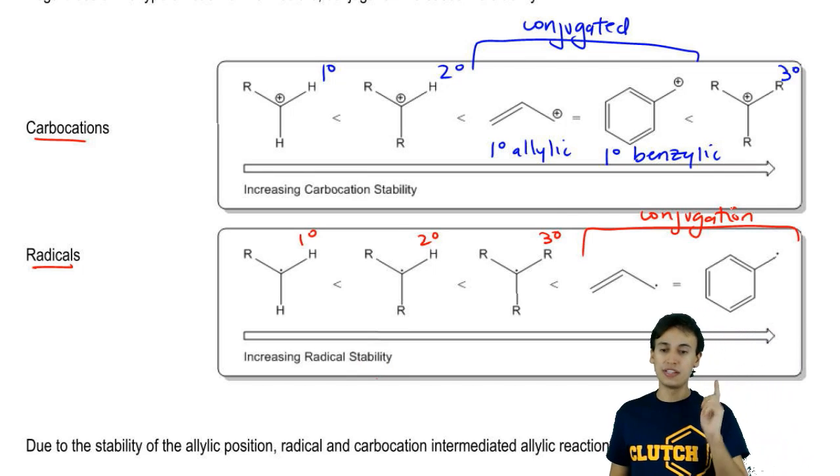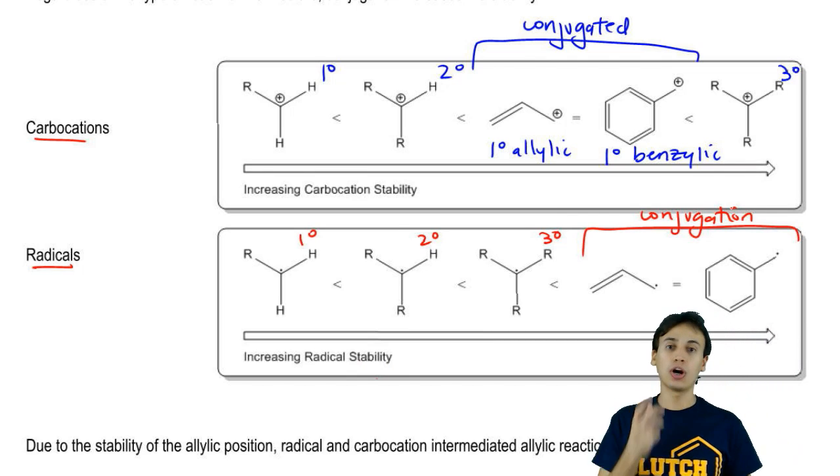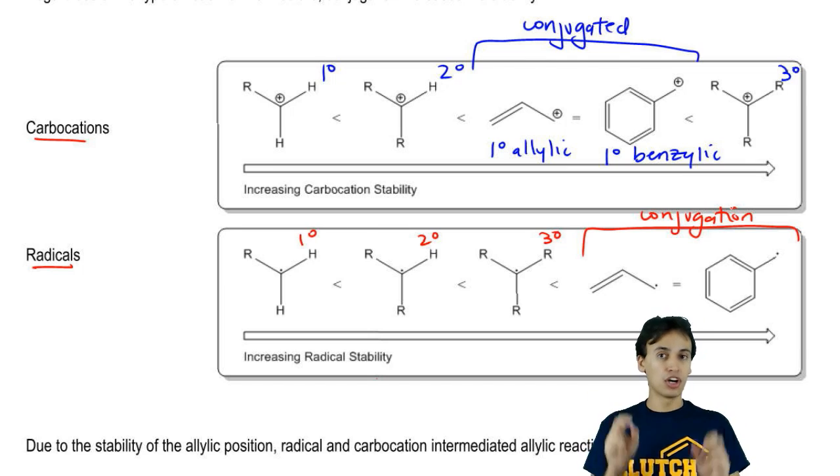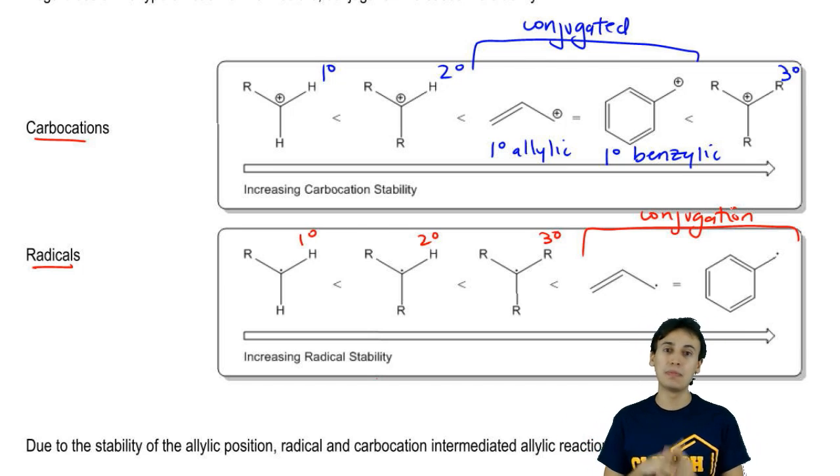However, there's a big difference which is that for carbocations, we tend to say that hyperconjugation or the addition of R groups is actually going to be the best thing for a carbocation. If you have a tertiary carbocation, that is the most stable.